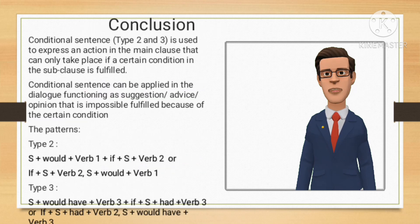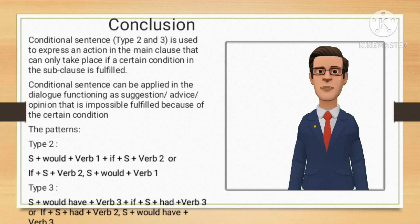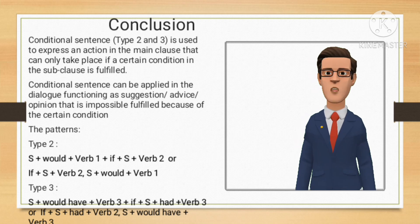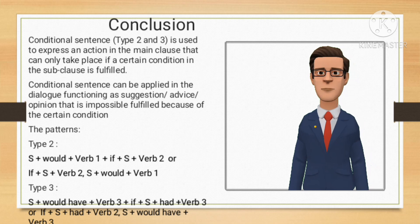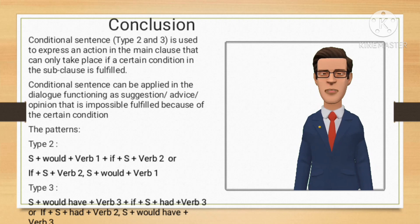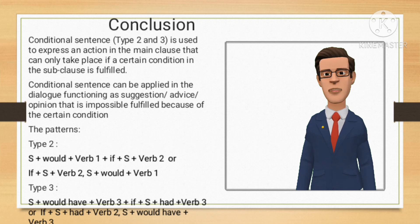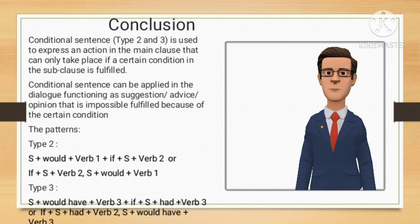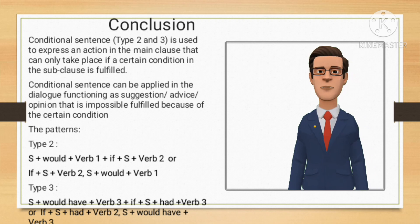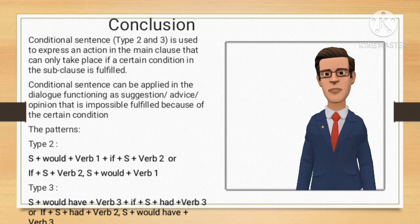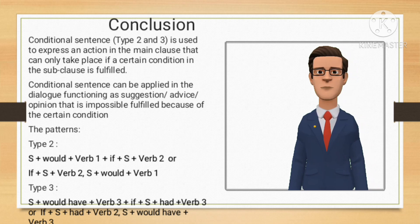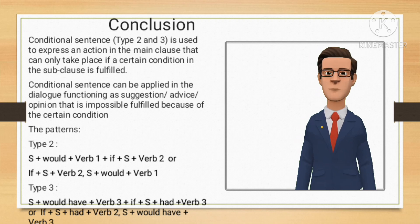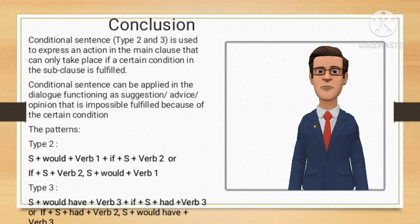So the conclusion of our study today: 1. Conditional sentences type 2 and 3 are used to express an action in the main clause that can only take place if a certain condition in the sub-clause is fulfilled. 2. Conditional sentences can be applied in dialogue functioning as suggestions, advice, or opinions that are impossible to fulfill due to a certain condition. The patterns — type 2: subject + would + verb 1, if + subject + verb 2 (or vice versa). Type 3: subject + would have + verb 3, if + subject + had + verb 3 (or vice versa).